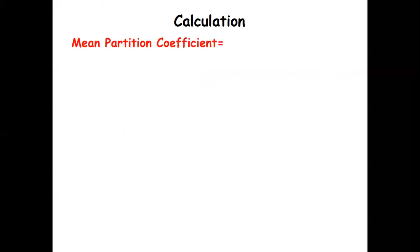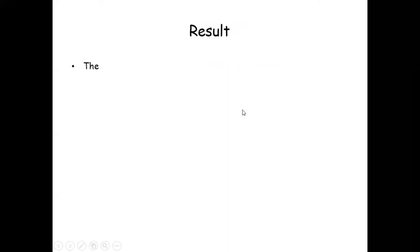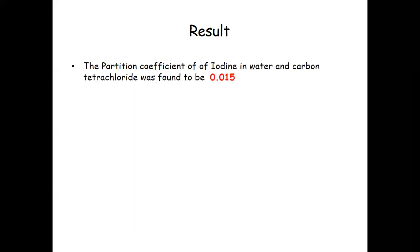In the above table all values have been calculated. The K values for each bottle are: bottle A = 0.017, bottle B = 0.018, bottle C = 0.014, and bottle D = 0.013. The mean partition coefficient is the average of all four values, giving a final average of 0.015. Result: the partition coefficient of iodine in water and carbon tetrachloride was found to be 0.015.